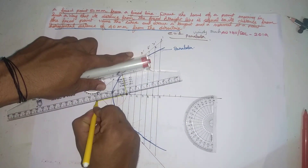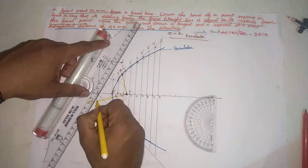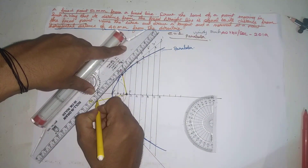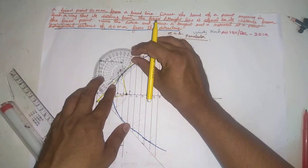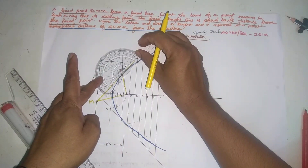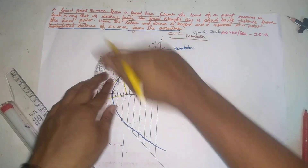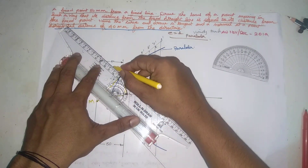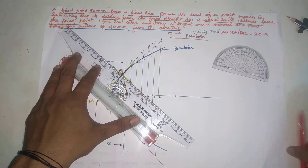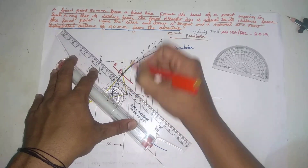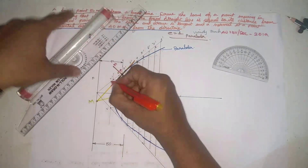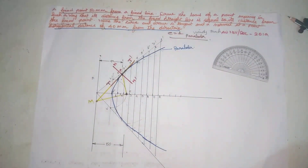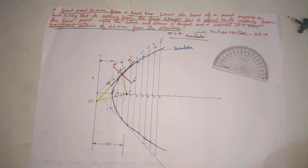Mark the D-point and the M-point. If we draw the line MP, this is the tangent. If we draw the perpendicular line through P, this is the normal. So this is the normal N-N-dash and this is the tangent T-T-dash. This is the answer. Thank you for watching.